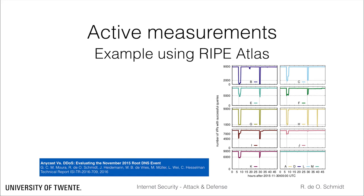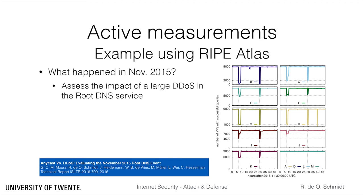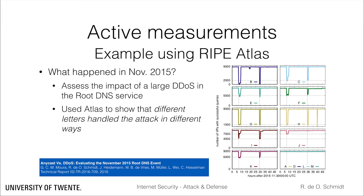An example of research using the public data from RIPE Atlas was the analysis of the impact of a large distributed denial-of-service attack targeting the root DNS service in November 2015. Using the Atlas data, the researchers could show how the different root DNS servers, each one defined by a letter, handle the attack in different ways, mostly by leveraging their anycast deployments to absorb the attack traffic at multiple sites. The picture on the right shows an example of this analysis. Atlas probes are set to periodically probe the root DNS, and the drops in the plots indicate how much each root letter suffered due to malicious traffic consuming resources.